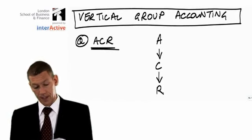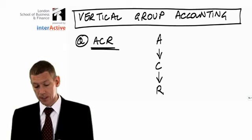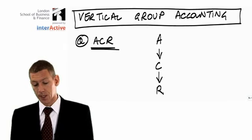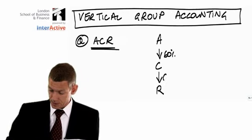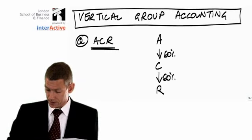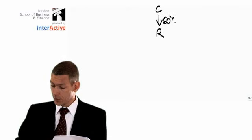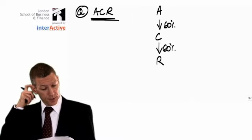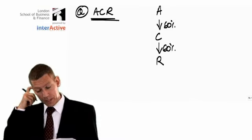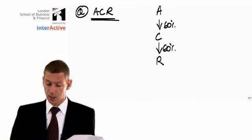A, the parent, buys 60% of entity C, which in turn buys 60% of entity R. So it's 60% and 60%. The question is, calculate the minority interest in the group. What we really need to know is the minority interest in R.